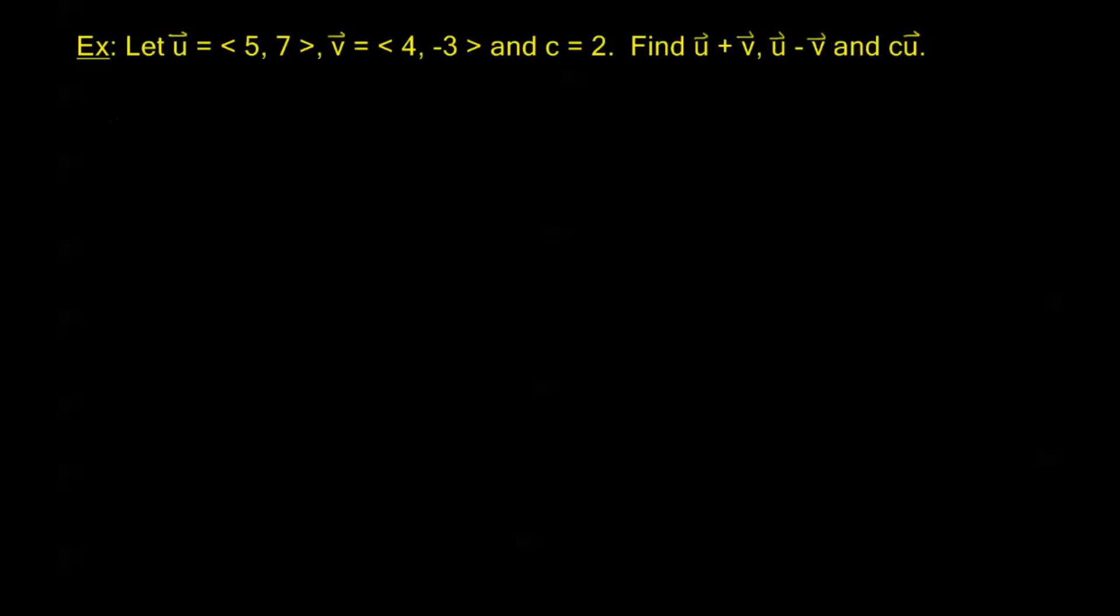My u plus v. By our formula, I'm just going to be adding the relative components, or the respective components. So I'm going to add the horizontal components, u has a horizontal component of 5, v has a horizontal component of 4. And I'm going to add the vertical components, 7 plus negative 3. And I get this sum, the vector u plus v is the vector <9, 4>.